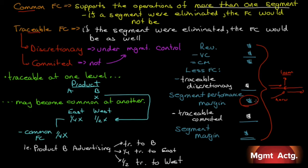The hero should be evaluated based on the segment performance margin here. That's why this is the big reason why you'd separate your traceable fixed costs into a discretionary and a committed. Because if you're going to make a decision about how to fix your traceable fixed costs, you can really only do it at the level of the discretionary fixed costs, not the committed fixed costs. So, we have this new number now called a segment performance margin.